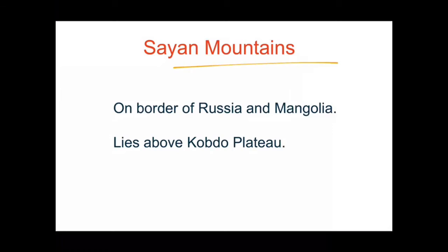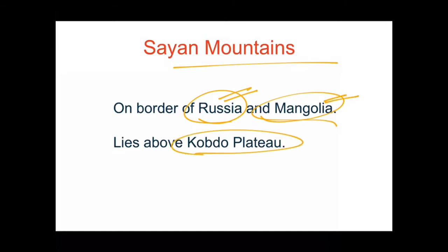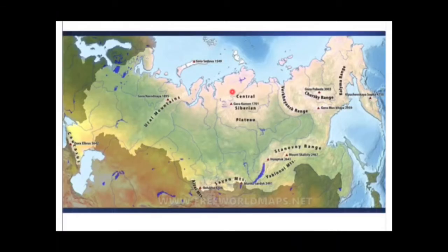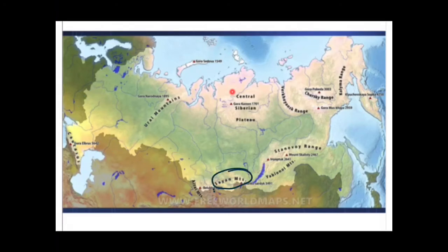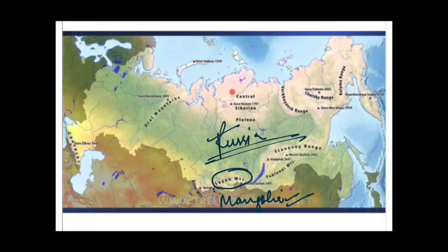The Sayan Mountains lie on the border of Russia and Mongolia. The major part lies in Russia, but a minor part also lies in Mongolia. The Kobdo Plateau, which we just saw, lies below the Sayan Mountains. Looking at the map, you can see that Sayan Mountains lie mostly in Russia with some part in Mongolia. The Sayan Mountains lie above the Kobdo Plateau.